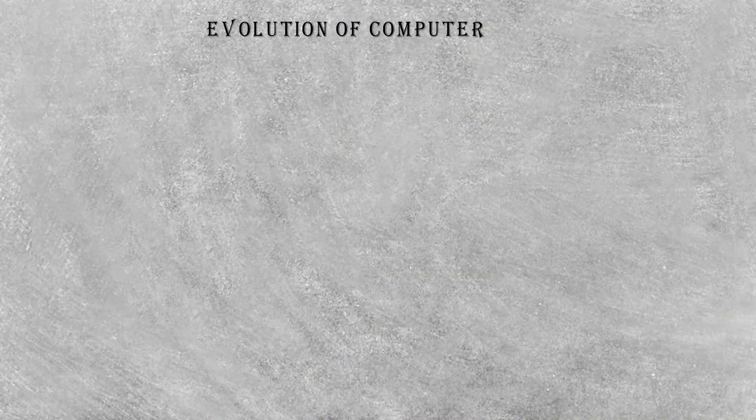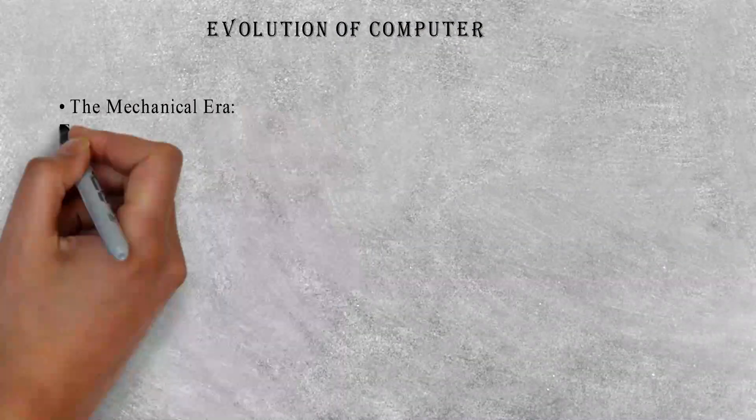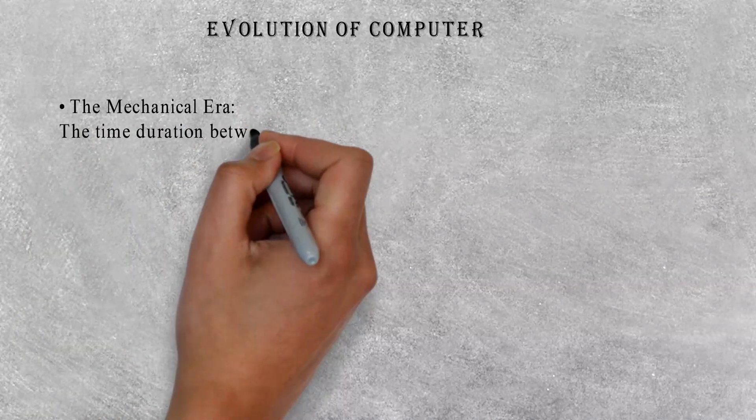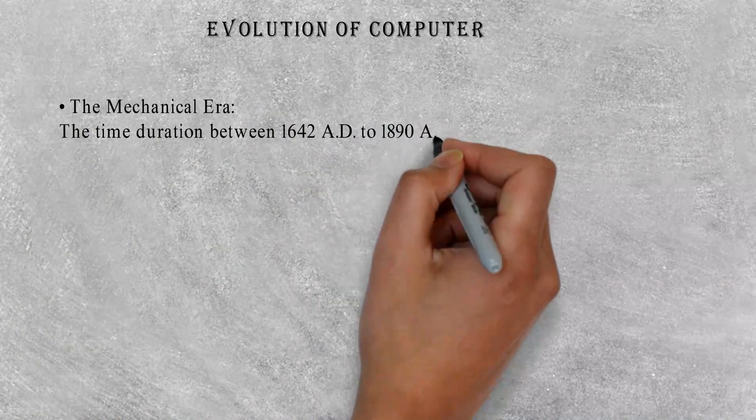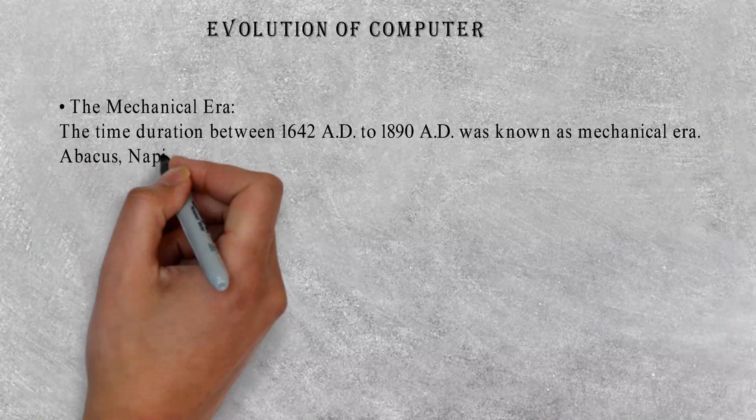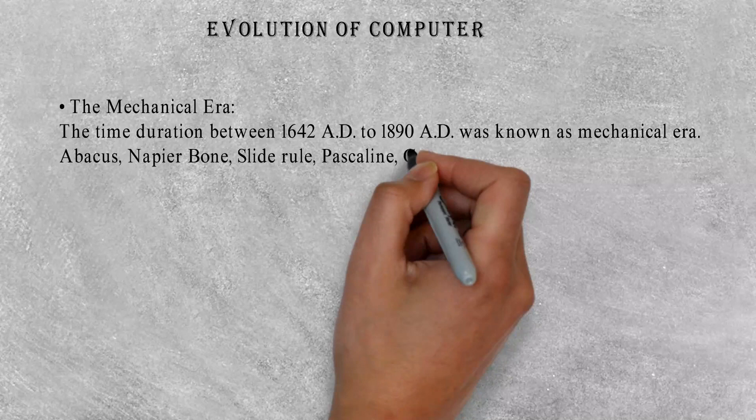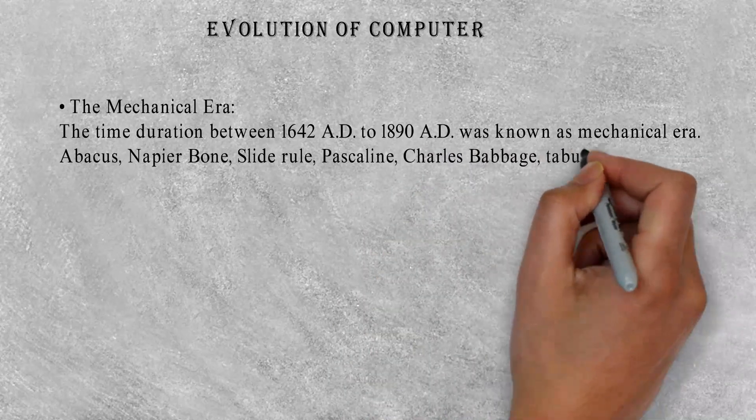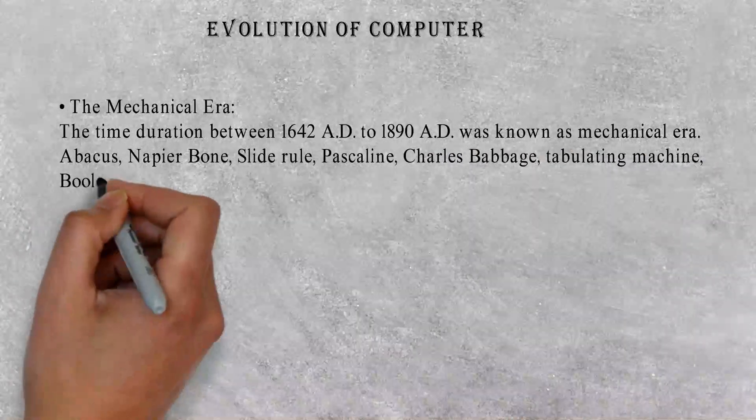Evolution of Computer. The Mechanical Era: The time duration between 1642 AD to 1890 AD was known as Mechanical Era. Examples include Abacus, Napier Bone, Slide Rule, Pascaline, Charles Babbage, Tabulating Machine, and Boolean Algebra.